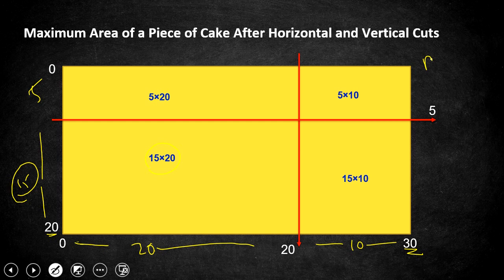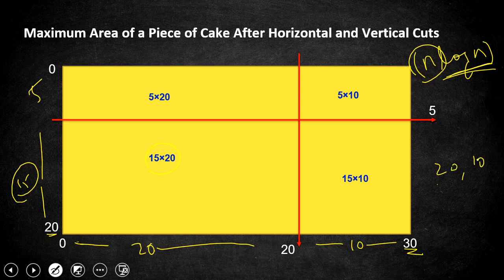This approach runs in O(n log n) time complexity because we sort both the horizontal and vertical cut arrays (O(n log n)), then iterate to find maximum height and width (O(n)). We sort the arrays to avoid negative values — for example, if heights are 20 and 10 in unsorted order, computing the difference gives minus 10, so sorting first ensures all differences are positive.